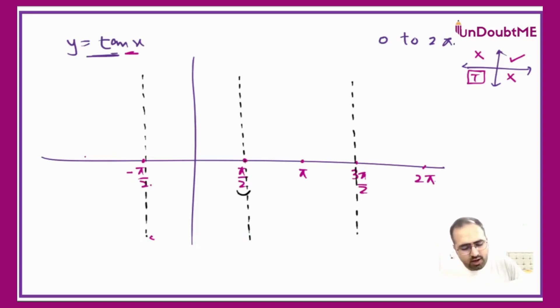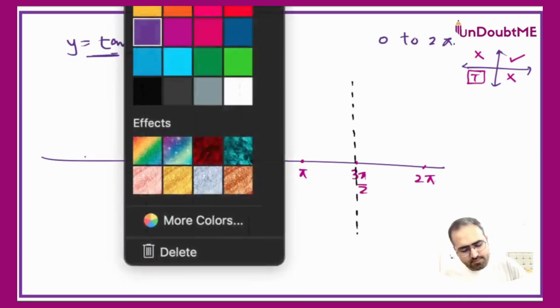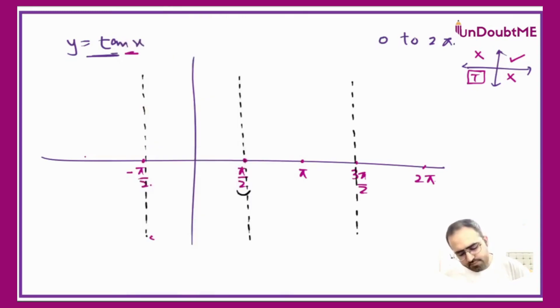Now to see the pattern how the graph of tan looks like, it will be almost like this, and then it will go on the other side like this. The first difference between the graph of sine and cos is the period. Obviously their appearance is very different, but other than that, the very fundamental difference is period. Period for sine and cos was 2π. Period for tan is π.